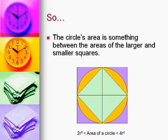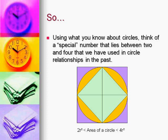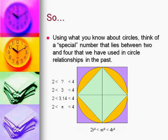So the circle's area is something between the areas of the larger and smaller squares. The smaller square was 2r² and the bigger square was 4r², so the area of the circle is somewhere in between. Think of a special number that lies between two and four that we've used in circle relationships in the past. 3.14 is that special circle number — because 3.14 is pi. So: 2r² < πr² < 4r².